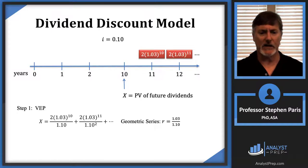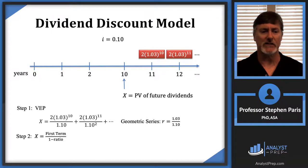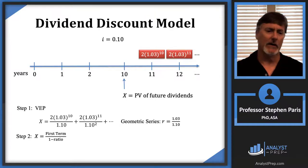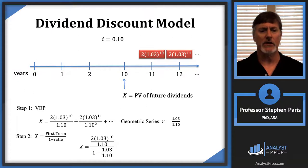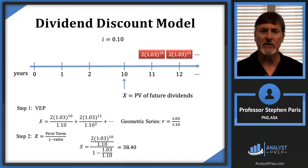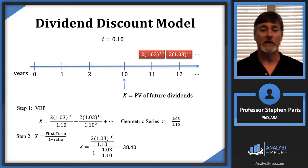I've got this geometric series with a common ratio of 1.03/1.1. The value of a geometric series is the first term divided by one minus the ratio. Plugging in the first term and dividing by one minus the ratio, and doing the numeric calculations, you get 38.4 as the price of the stock — that's CapX — 10 years from now using the dividend discount model.